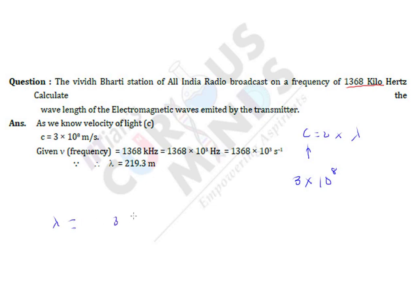So 3×10⁸ divided by the frequency. Here they have converted kilohertz into hertz, so it is 1368×10³ Hz. Therefore, 3×10⁸ upon 1368×10³. On solving this, you get the answer as 219.3 meters.